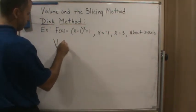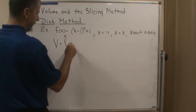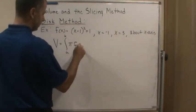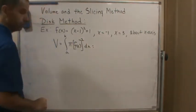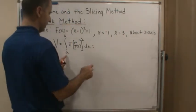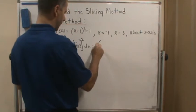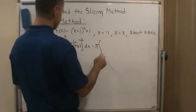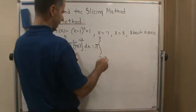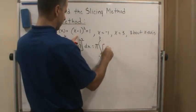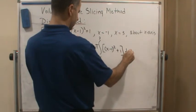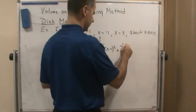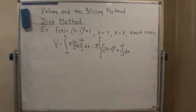All we have to do to use the disk method is use the formula: integral from a to b of pi times f of x squared dx. So now we fill in the information. It's going to be pi, pulled out because it's just a constant, going from negative 1 to 3, and it's going to be x minus 1 squared plus 1 dx, and then we square that.